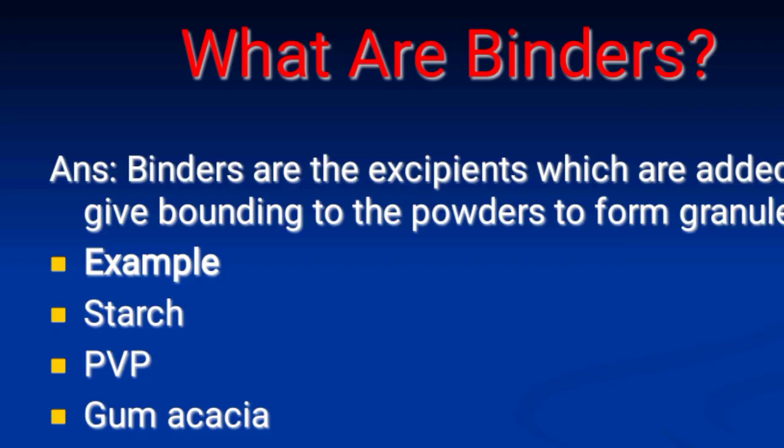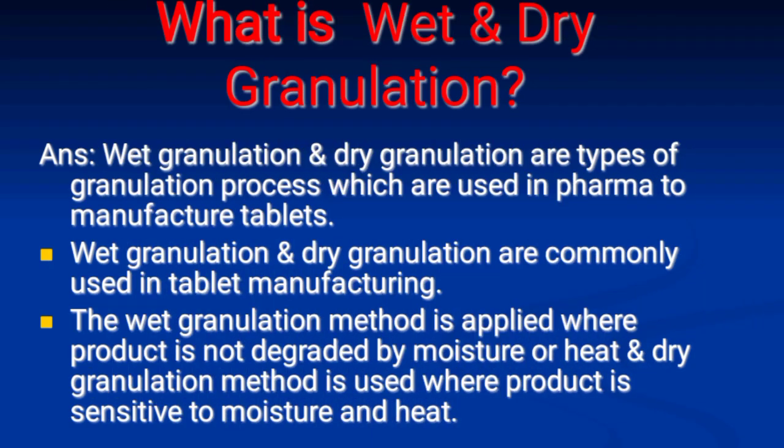Next: What are binders? Answer: Binders are excipients which are added to give binding to the powder to form granules. Examples are starch, PVP, gum, acacia, and gelatin. Finally: What is wet and dry granulation? Answer: Wet granulation and dry granulation are types of granulation processes used in pharma to manufacture tablets. The wet granulation method is applied where the product is not degraded by moisture or heat, while the dry granulation method is used where the product is sensitive to moisture and heat.